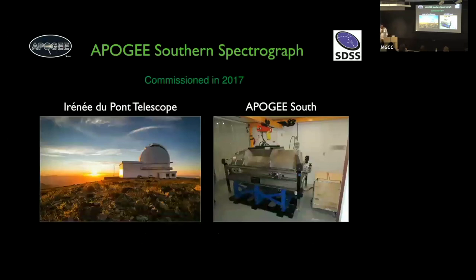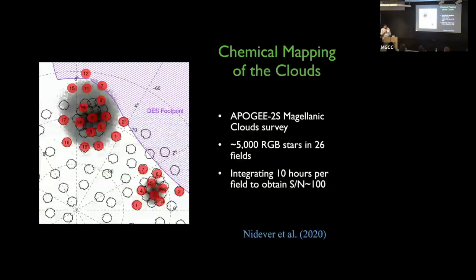APOGEE started at APO back in 2011, and in 2017 we commissioned a copy in the southern hemisphere at LCO — very exciting for me because I wanted to study the Magellanic Clouds. Our MC survey is the first large systematic abundance study of the Clouds: 5,000 RGB stars in 26 fields, which we roughly doubled because of the pandemic, integrating about 10 hours per field to get signal-to-noise of 100.